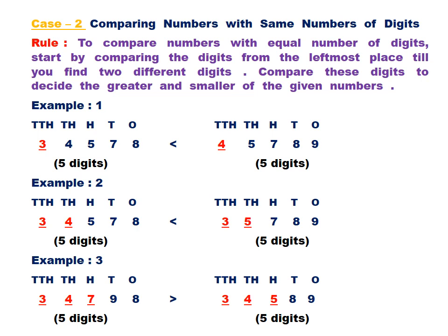Let us see example number one. I have written two numbers; both contain five digits. You have to compare the digits at the highest place, which in this case is the 10,000s place. The greater digit makes the greater number. Here, four is greater than three, so 45,789 is greater than 34,578.